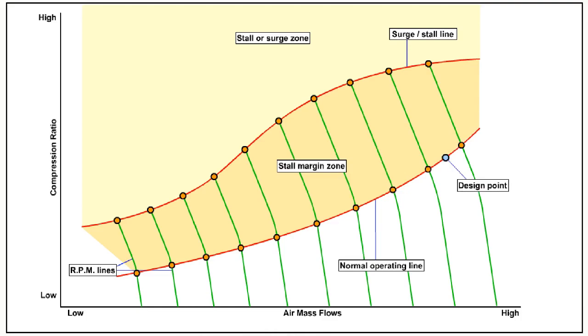Every compressor has an optimum operating point on the normal operating line which represents just one particular compression ratio, compressor speed and air mass flow. The optimum point is called the design point.